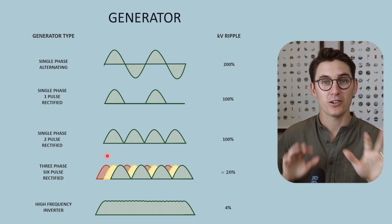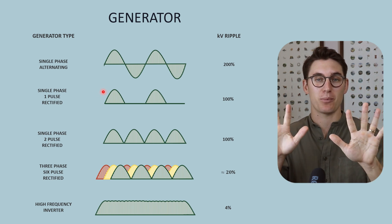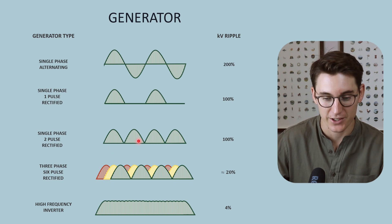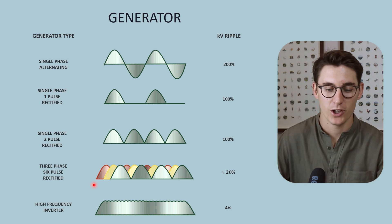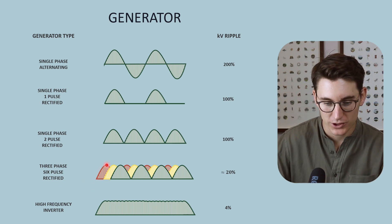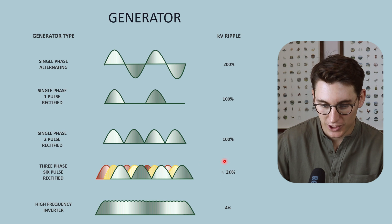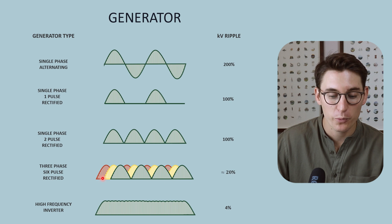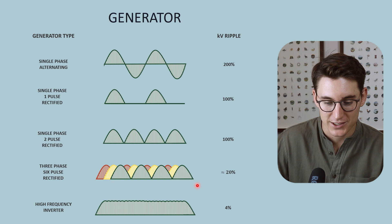What we can do is take multiple phases of current and overlap them with one another. Instead of a single phase alternating current, we can have a generator that applies three separate phases of current. If we full wave rectify those phases and time them with some delay between them, we get voltage that is much more steady. The peak voltage ripple between the three phases is only about 20%, giving us much more consistent flow with no periods of zero voltage. This is known as three phase rectified current.